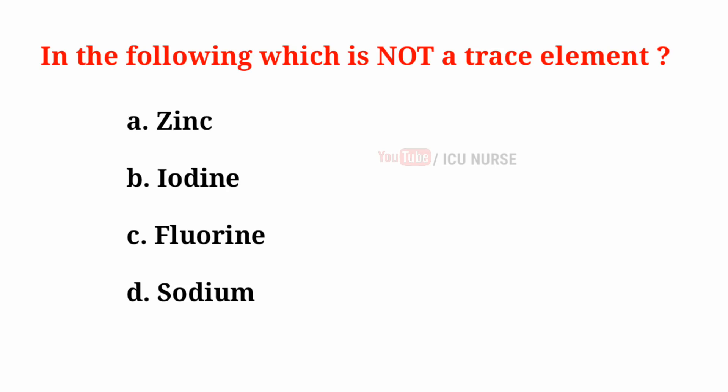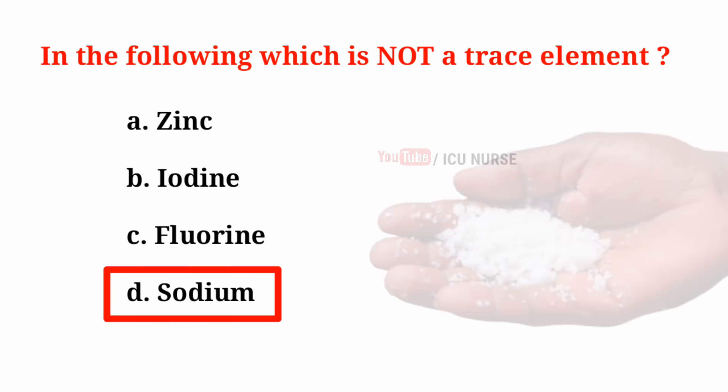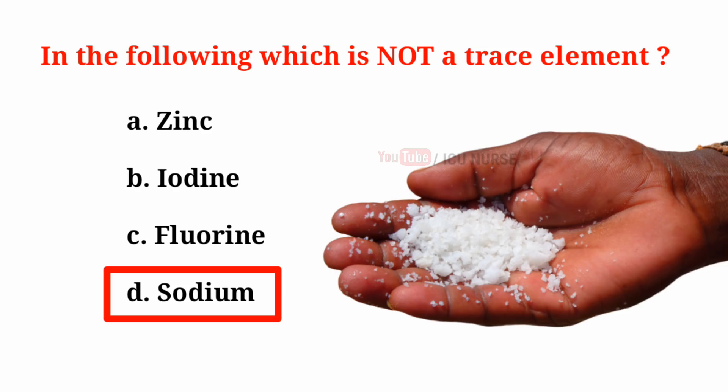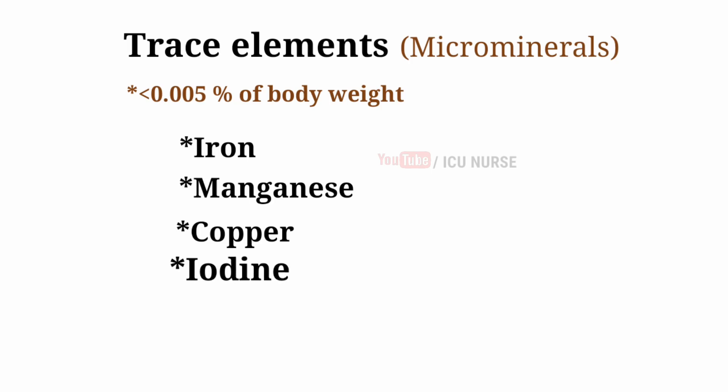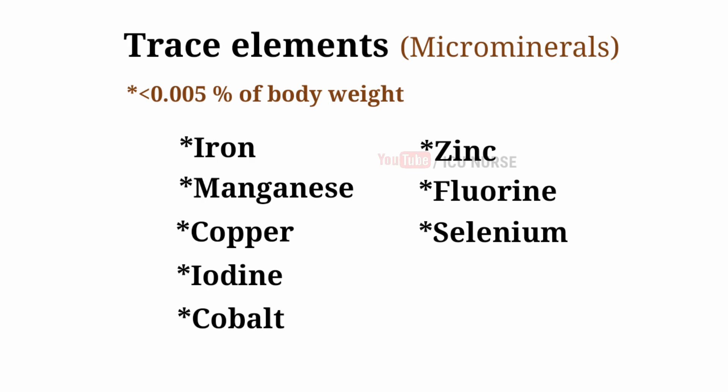Which of the following is not a trace element? A. Zinc, B. Iodine, C. Fluorine, D. Sodium. And the correct answer is D. Sodium. Trace elements, that is micro minerals, are essential minerals found in minute amounts; each makes up less than 0.005% of body weight. Trace elements include iron, manganese, copper, iodine, cobalt, zinc, fluorine, selenium, and chromium.